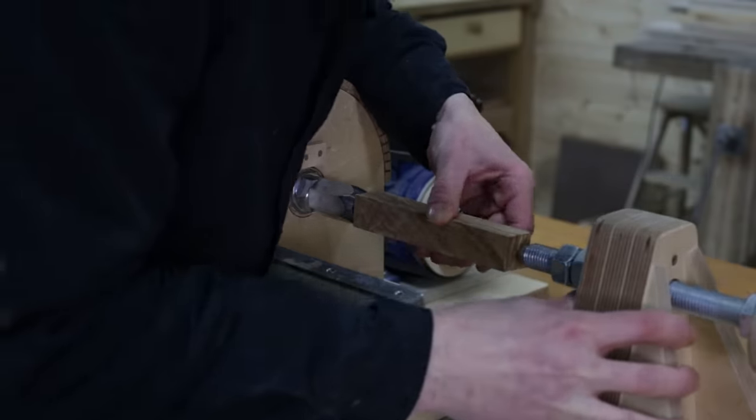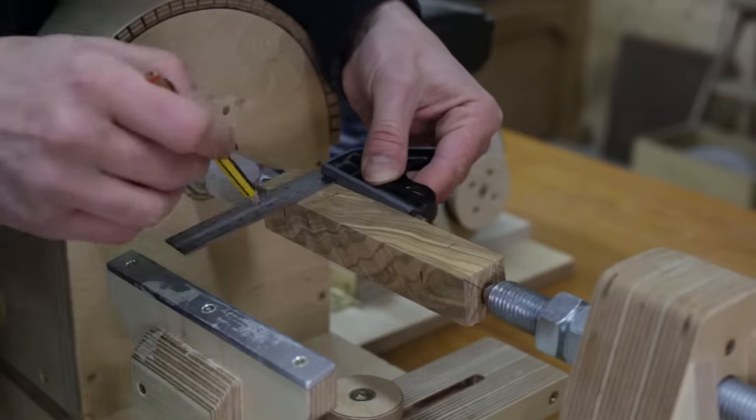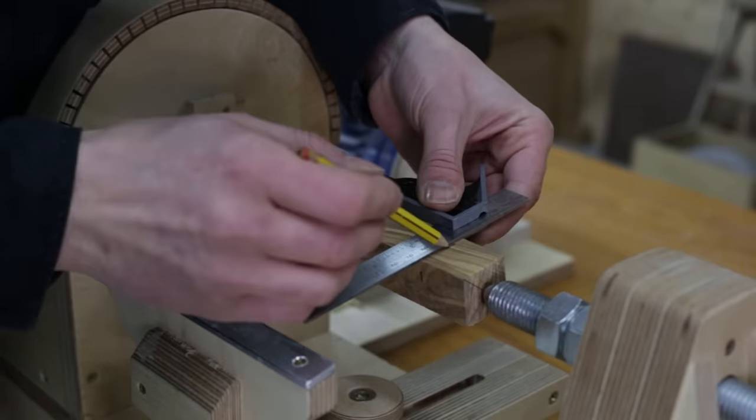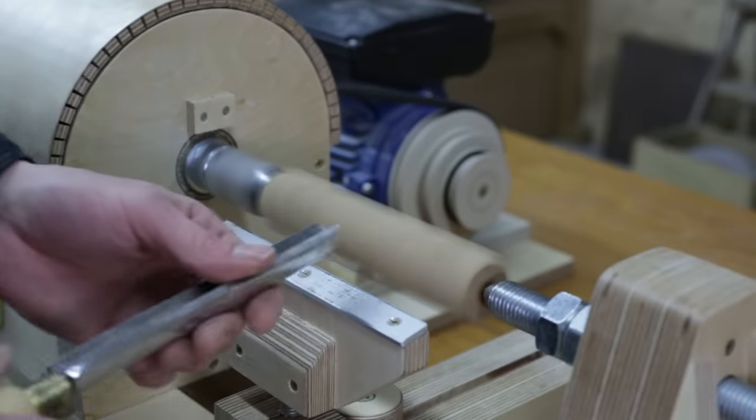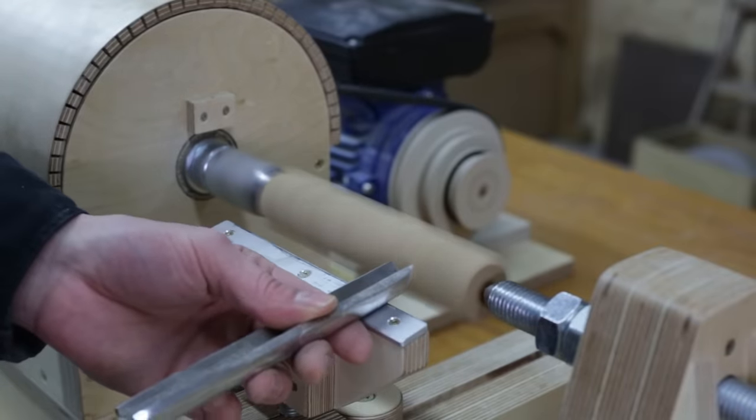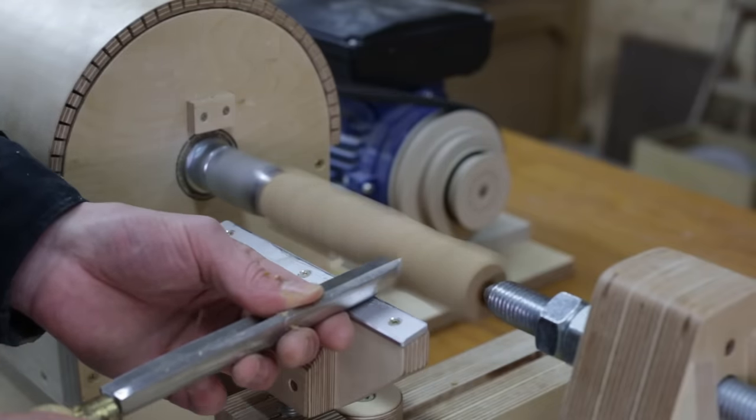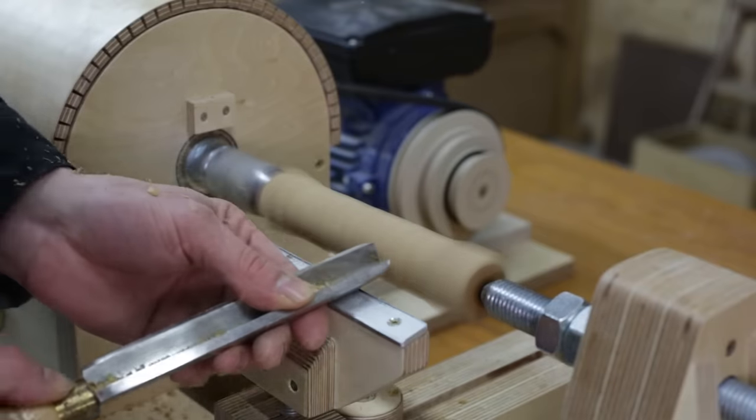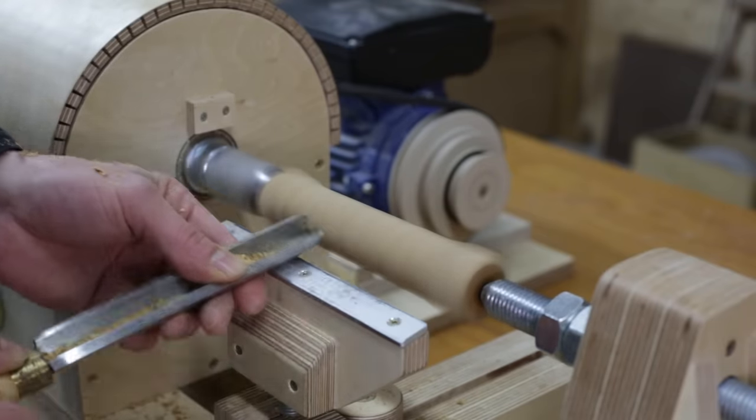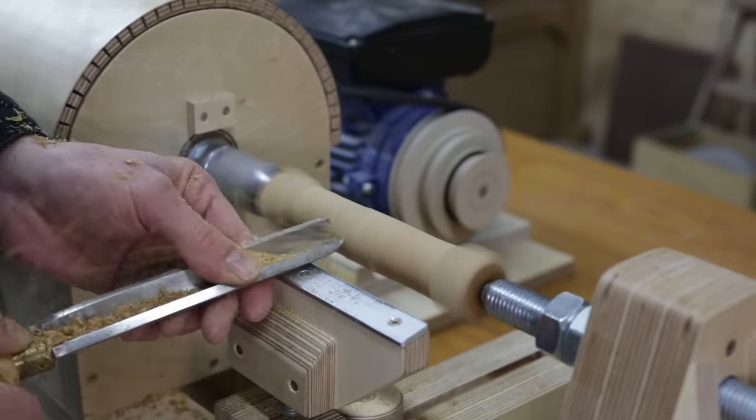After marking the centers, I'll load the olive wood into the lathe and start shaping it with a roughing gouge. I'll leave some parts unturned on both sides of the workpiece so that I can use them as support in the next steps of the machining process.